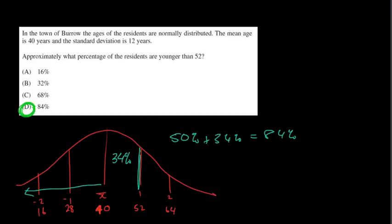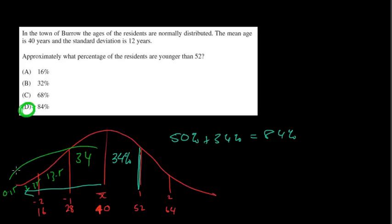So you can see why this table is very helpful. Likewise, you could have added the 34%, the 13.5%, the 2.35%, and the 0.15%, and added all those things up — we should already know that should be 50% anyway.